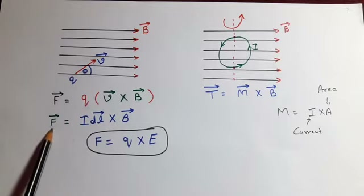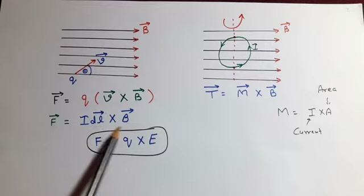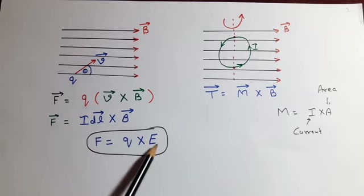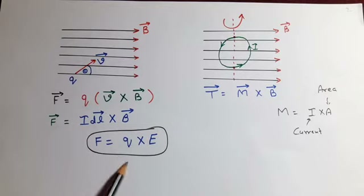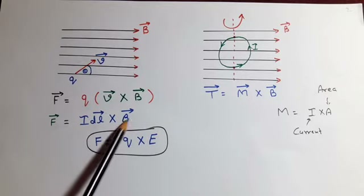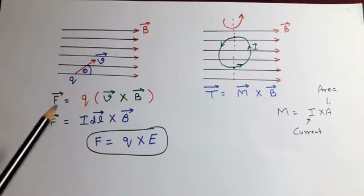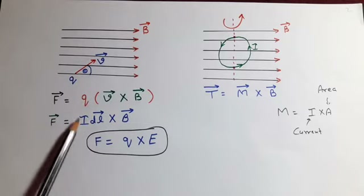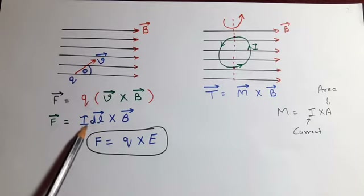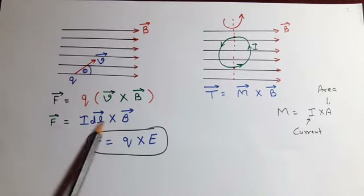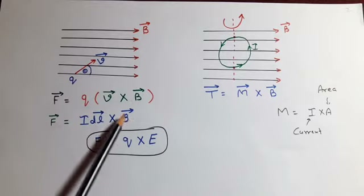If we place a current carrying element in this field, that element will also experience a force given by F equal to I·dL cross B. This expression is similar to the electric field intensity expression which is medium dependent, where E equals force per unit charge. In magnetostatics, because B is medium dependent, B equals force per unit current element, i.e. I·dL. This expression is valid only if the current carrying element is placed perpendicular to the magnetic flux lines, so that the cross product reduces to a simple product since sin 90 equals 1.